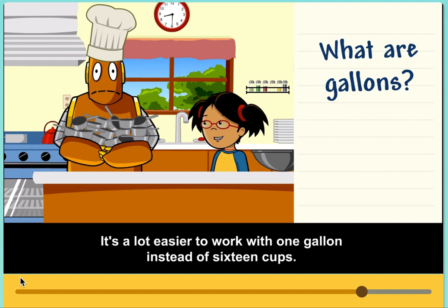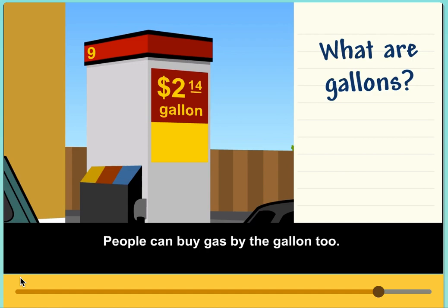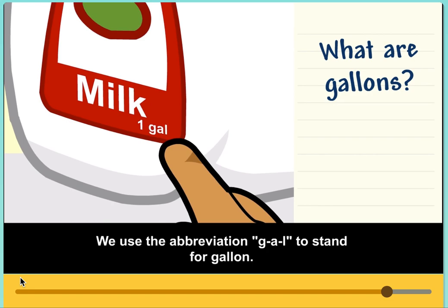You can have a gallon of milk, paint, or water. People can buy gas by the gallon too. We use the abbreviation GAL to stand for gallon.